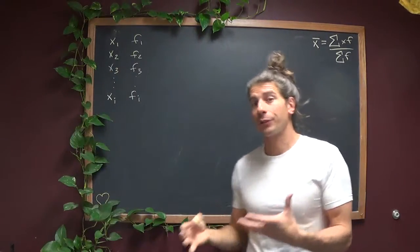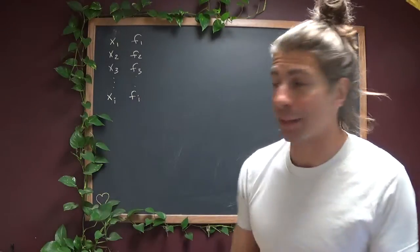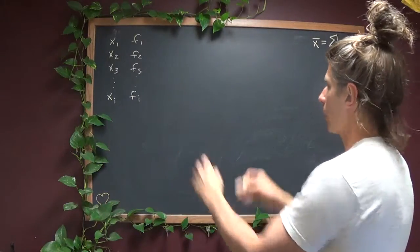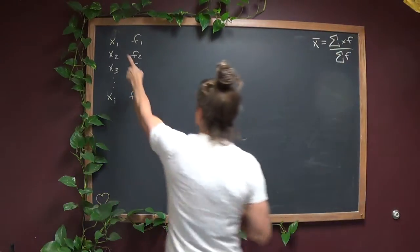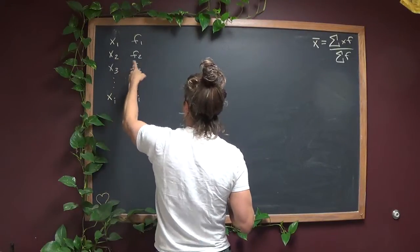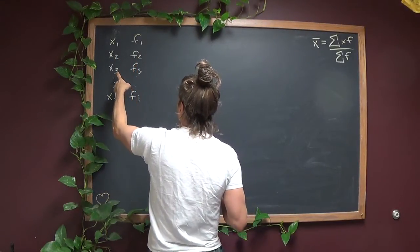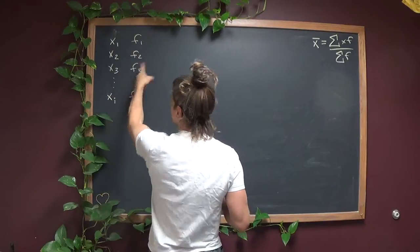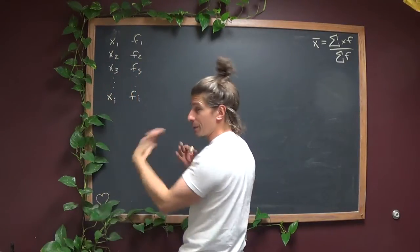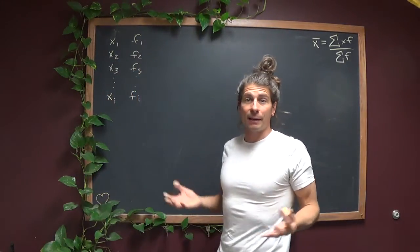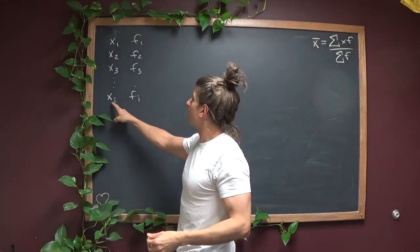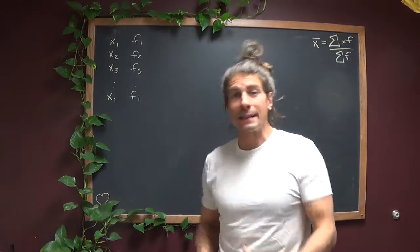In class, for example, when we were looking at our key data, zero keys were held by two people, one key was held by four people, two keys were held by six people, and so on. Finally we had somebody at the end who had 32 keys held by one person. So you've got this data distribution.